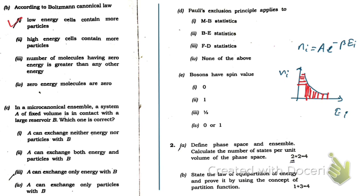Next, part c: in microcanonical ensemble, a system A at fixed volume is in contact with a large reservoir B. Which one is correct? It should be the first option: A can exchange neither energy nor particle with B, because in the microcanonical ensemble this exchange is not allowed.